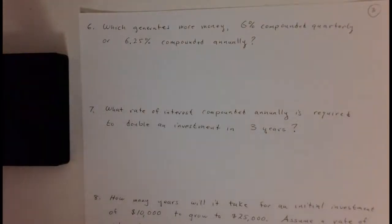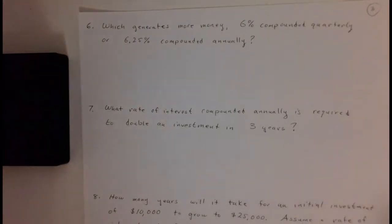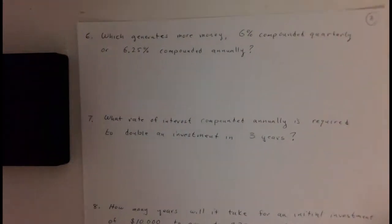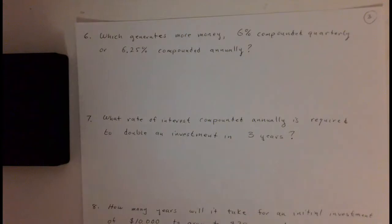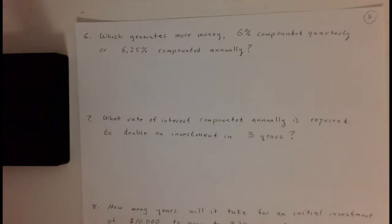In this next example, let's look at number six: which generates more money — six percent compounded quarterly, or six point two five percent compounded annually? Notice it does not tell you how much you're investing or how much time there is, and that's because it's not going to matter.